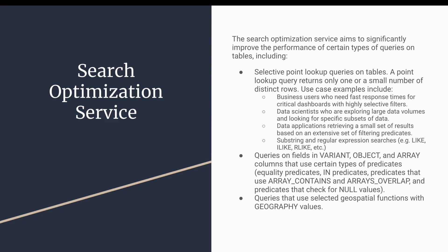The search optimization service works only when filtering for very few rows — such as searching for one specific customer or city. When enabled for a table, it creates additional metadata in the cloud services layer. However, this additional metadata requires compute power to maintain, so using the search optimization service means paying for both additional storage cost and computation.